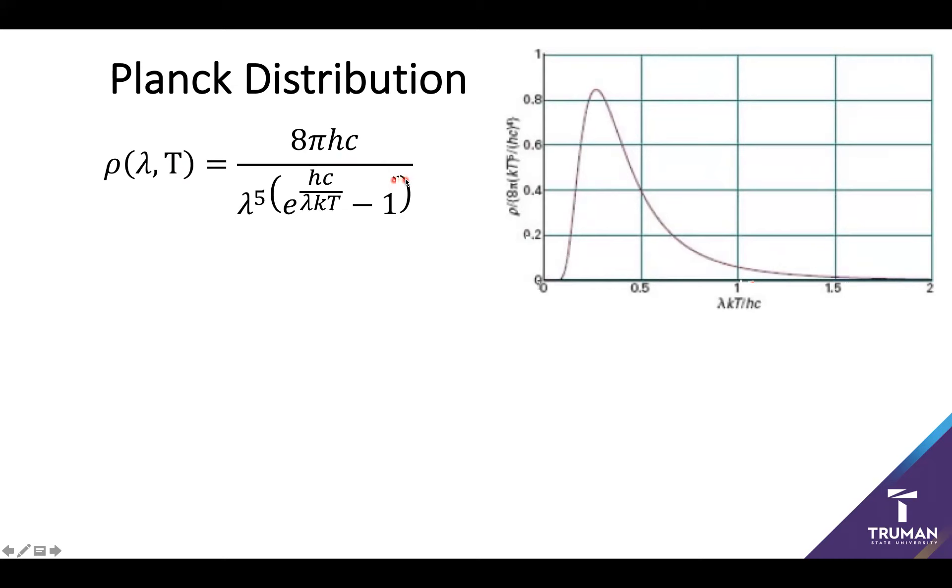The first one is going to be short wavelengths. In the classical distribution, this went to infinity. Let's see what happens with the Planck distribution. First, what you may notice is that as the wavelength goes to zero, we'd expect this polynomial term to also go to zero. We're dividing by zero. This is a very bad thing.